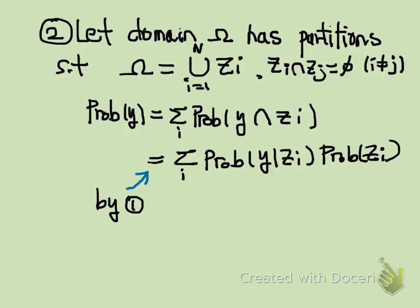Let's assume that event domain omega has partitions Z1 through Zn such that the union of Z1 through Zn equals domain omega, and Zi intersection with Zj is empty if i and j are different. Then the probability of Y is given by the summation of probability of Y intersection with Zi for all i. By the definition of conditional probability from fact 1, this equals the summation from i equals 1 through n of probability Y given Zi times probability of Zi.